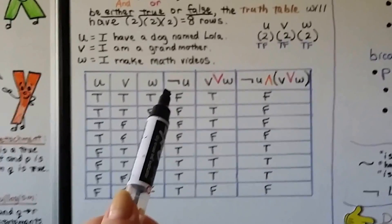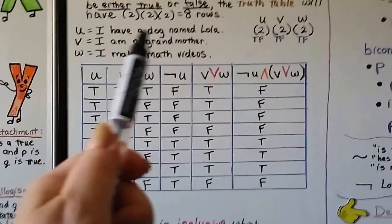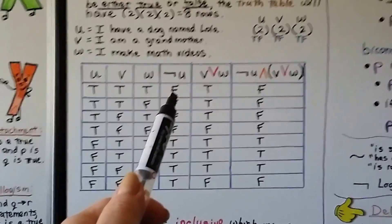So this is the logical negation symbol. That means not U. That means I do not have a dog named Lola. Well, that would be false.